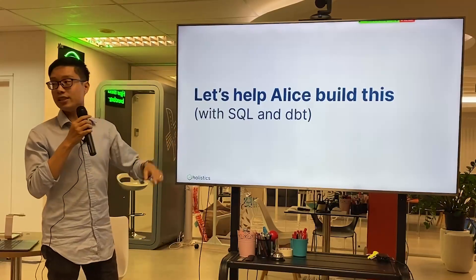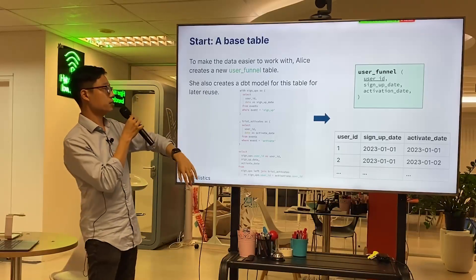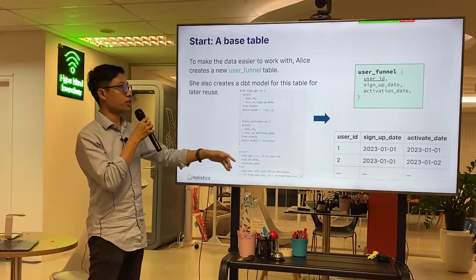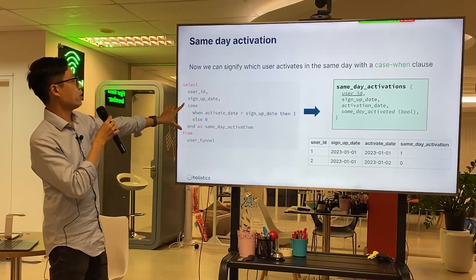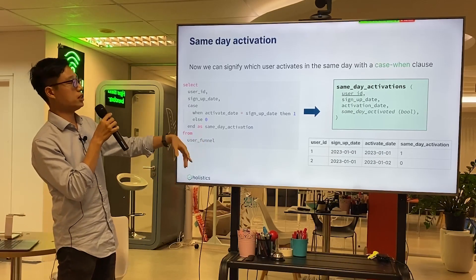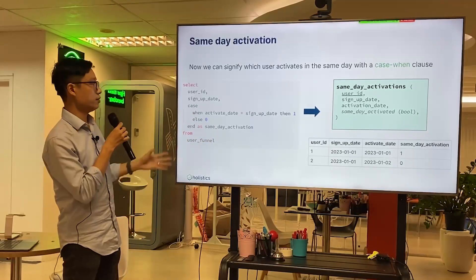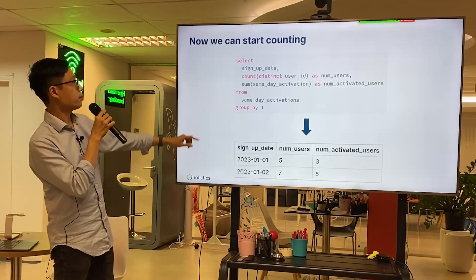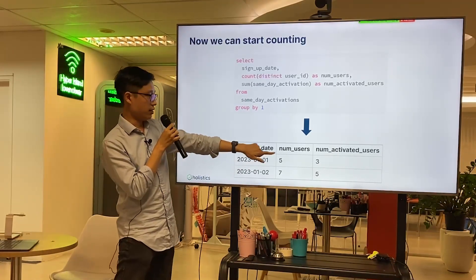To build this with SQL and dbt, we create a model called 'user funnel' using a sequence maker. The output has columns for user ID, signup date, and activate date. We use a CASE WHEN to mark whether the user activated on the same day as signup: CASE WHEN activate_date equals signup_date THEN 1 ELSE 0. Then SUM that to get a count.